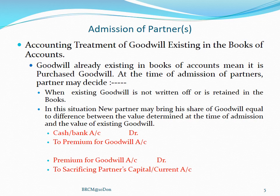The entry will be: cash account debited to premium for goodwill account, and then premium for goodwill account debited to sacrificing partners' capital or current account. That is, the cash brought in is for premium for goodwill, so cash is debited and premium for goodwill is credited. Then this premium for goodwill account is debited and sacrificing partners are credited.